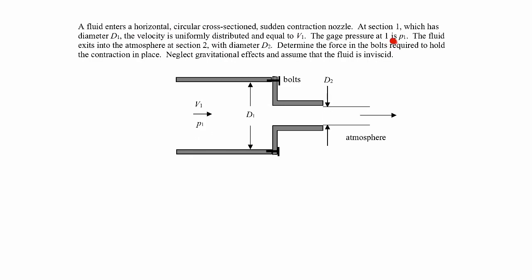We're asked to find the force in the bolts required to hold the contraction in place — there are bolts here that connect this step-down portion to the original pipe. We're also told to neglect gravitational effects and assume the fluid is inviscid. This will be a linear momentum problem, because we're trying to find a force in the bolts, and force is related to linear momentum.